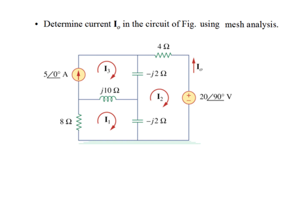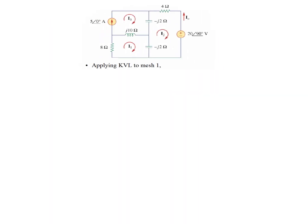Another example: in this circuit we have to find current I0, which is the current in loop number 2 but in the opposite direction. There are three loops. We identify loop 1 with current I1, loop 2 with current I2, and loop 3 with current I3. Applying KVL to mesh number 1: